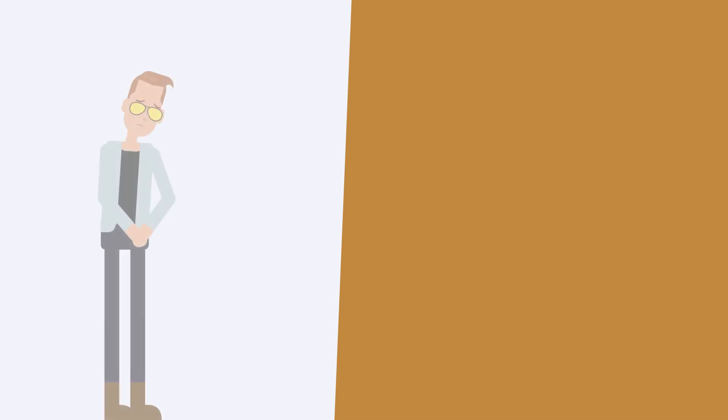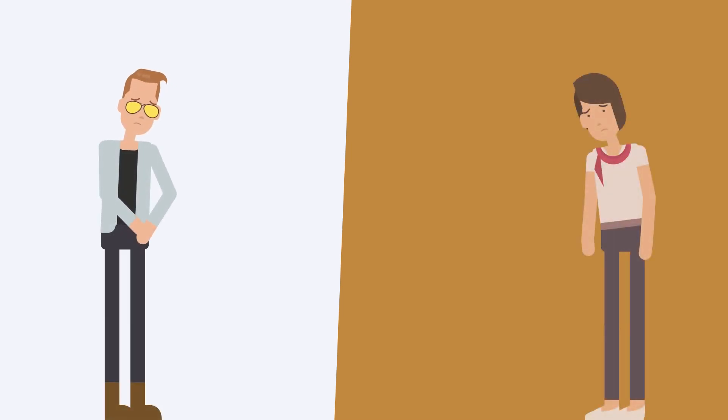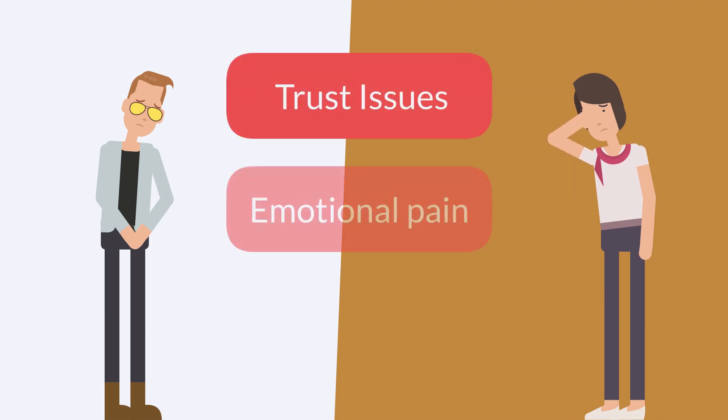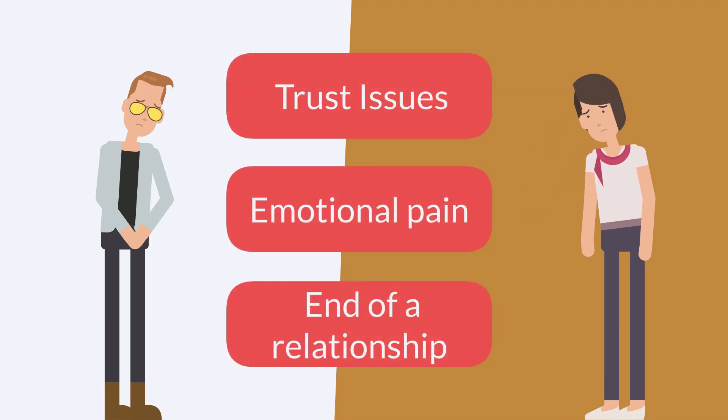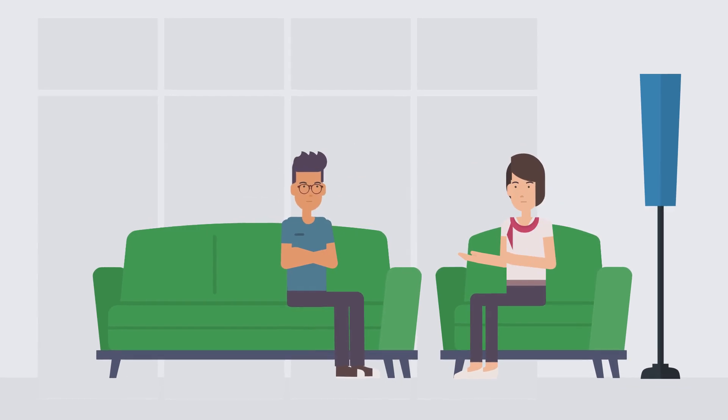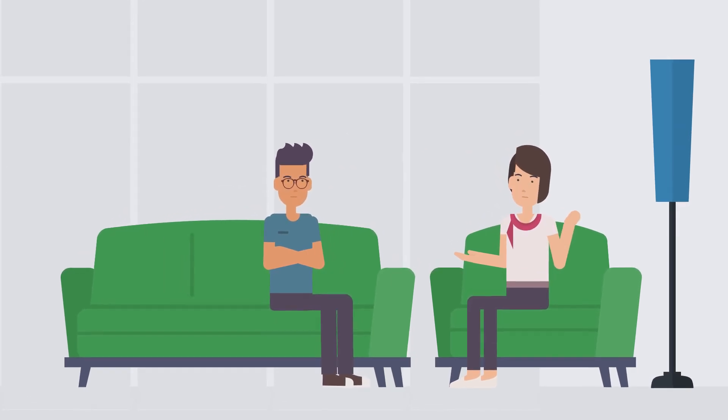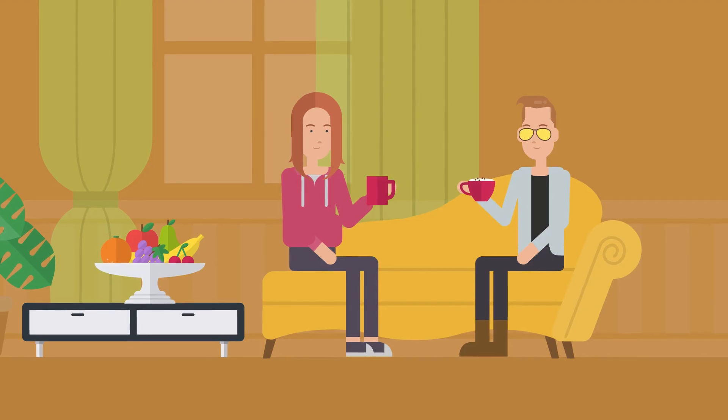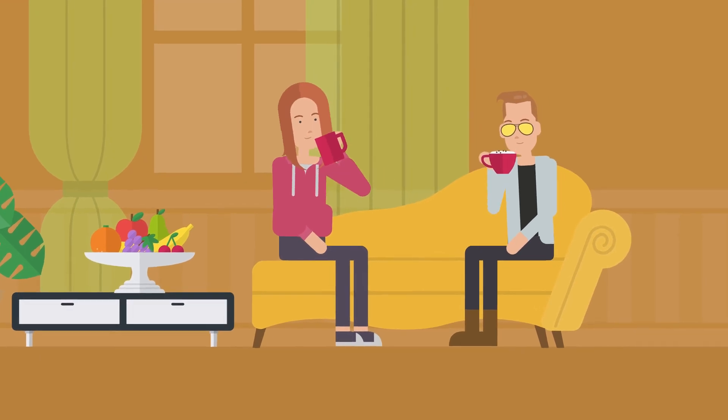Regardless of the reasons, infidelity can have serious consequences for both the person who cheats and their partner. It can lead to trust issues, emotional pain, and even the end of a relationship. It's important for couples to communicate openly and honestly about their needs and desires, and to work together to address any issues that may arise.